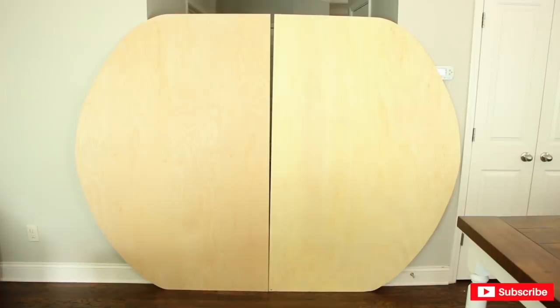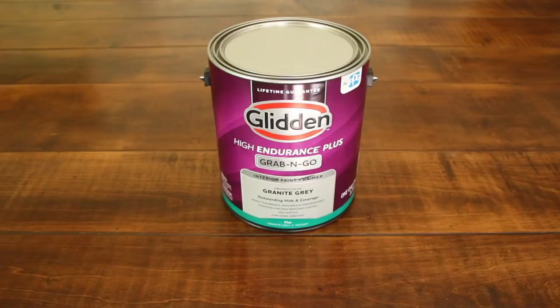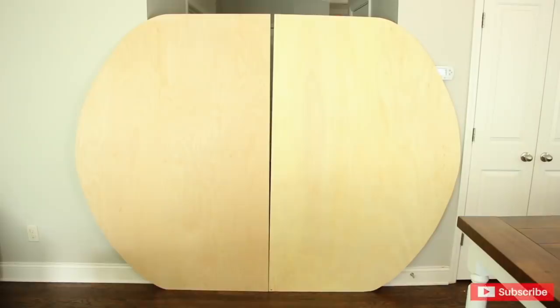Before I put my backdrop together, I'm going to paint it in a light gray called Granite Gray by Glidden. I got it at Walmart for a little over 20 bucks.